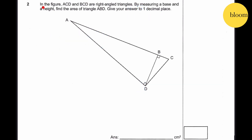Question 2: In the figure, ACD and BCD are right-angled triangles. By measuring a base and a height, find the area of triangle ABD. Give your answer to one decimal place. Take a ruler and measure BD — this is the base, which gives us 3 cm.